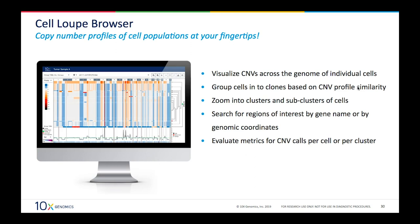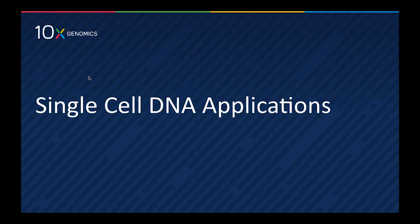10x developed a visualization tool called Loupe Single Cell DNA. It allows you to load the output file from the pipeline and visualize your entire population on screen. You can visualize CNVs across the genome of individual cells, and it performs hierarchical clustering to group cells into clones based on their similar CNV profiles. The tool is highly interactive — you can zoom into a cluster of cells by clicking, zoom into specific genomic regions by scrolling or entering coordinates, and evaluate CNV call metrics either per cell or per cluster.